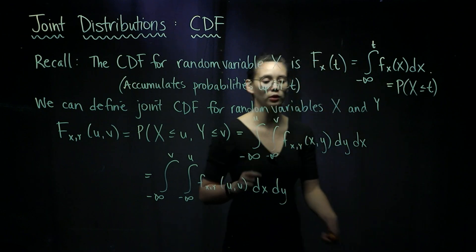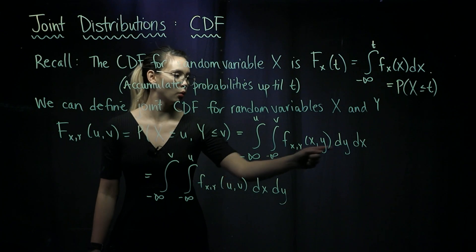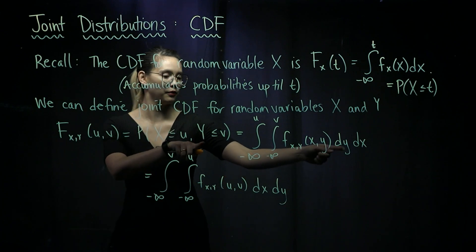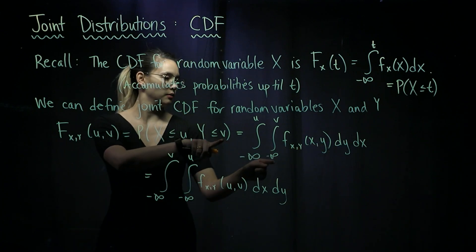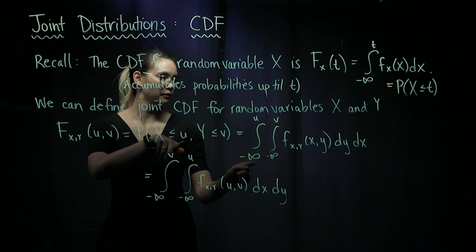This is going to be equal to integrating over our joint PDF, where Y goes from negative infinity up to V, and X goes from negative infinity up to U.